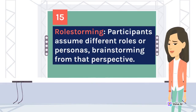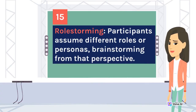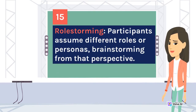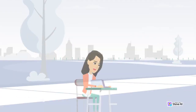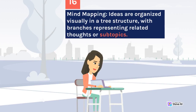Role-Storming: participants assume different roles or personas, brainstorming from that perspective. Mind-mapping: ideas are organized visually in a tree structure, with branches representing related thoughts or subtopics.